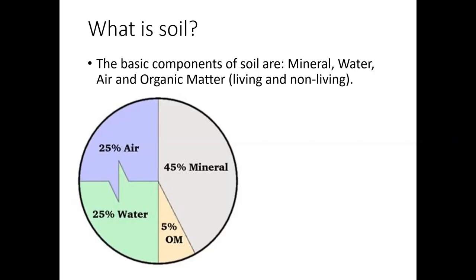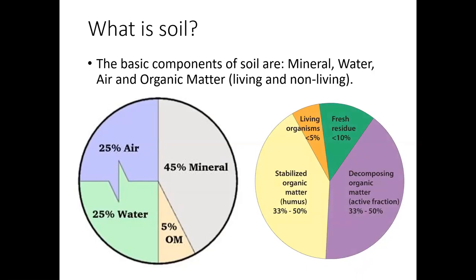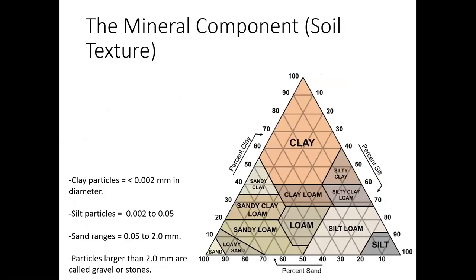Five percent organic matter would be wishful thinking for a lot of folks here in the Piedmont with eroded soils, but it's a general average for a good soil. Within that organic matter fraction, it's more complicated: it includes actual living organisms in the soil, things that just died, crop residue, roots from recently living plants, material beginning to break down, and stabilized carbon that's been in the soil for years, which we call humus.